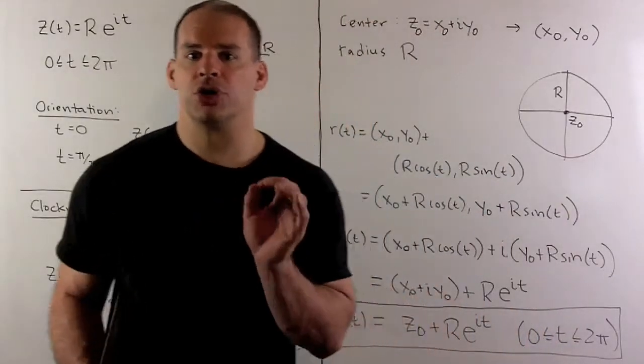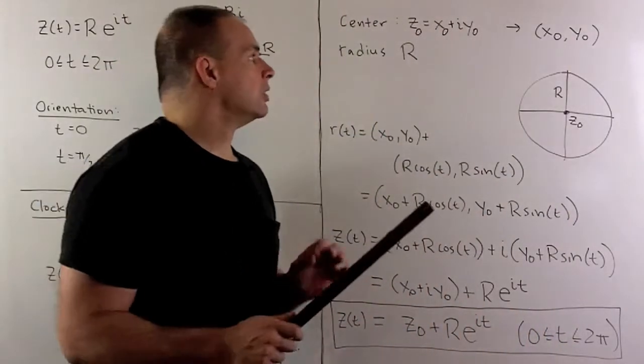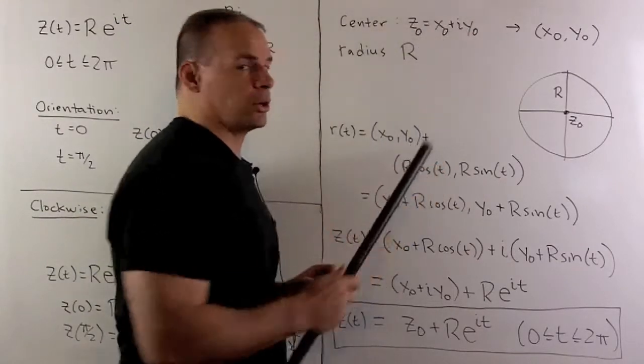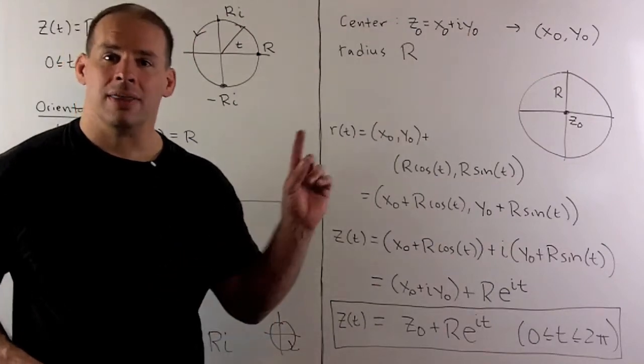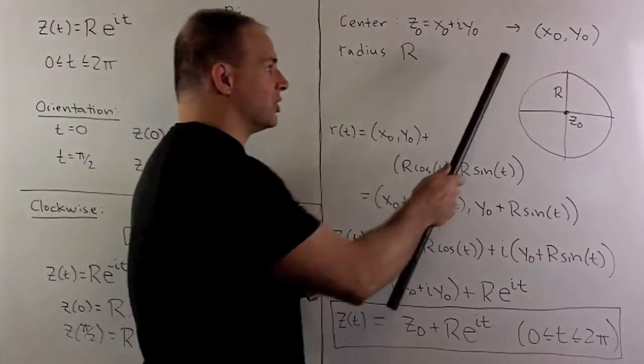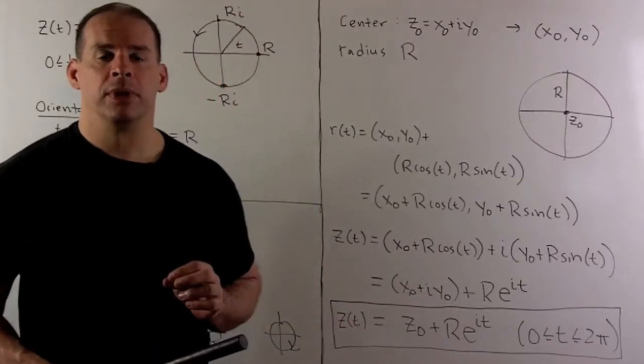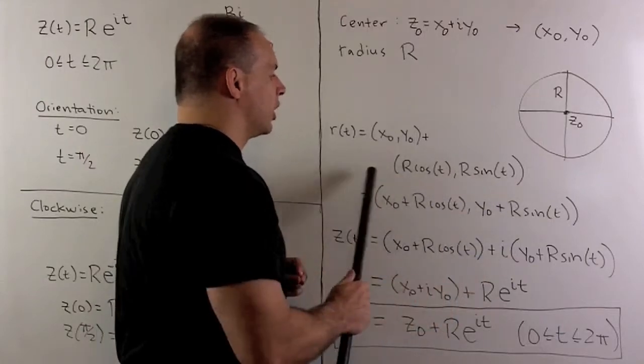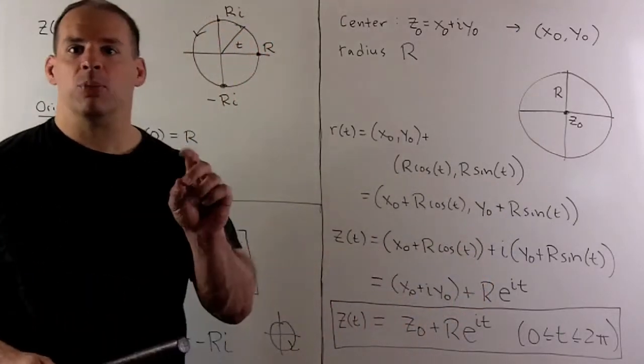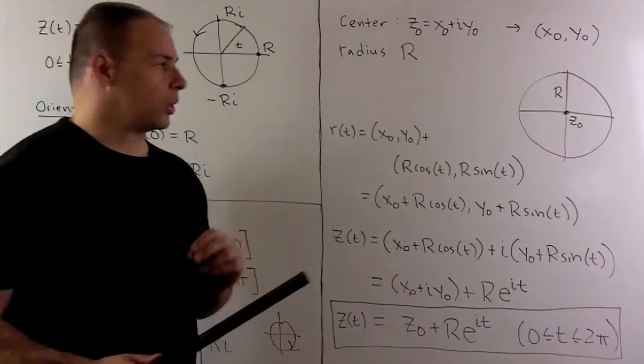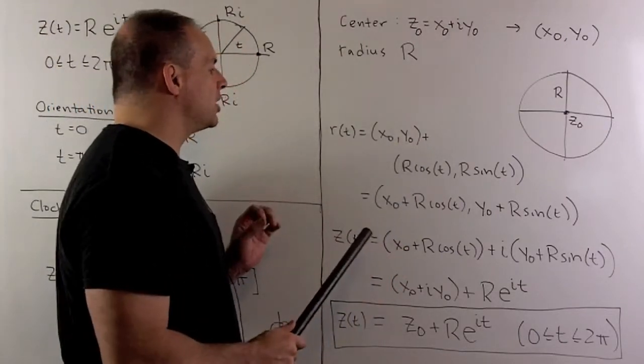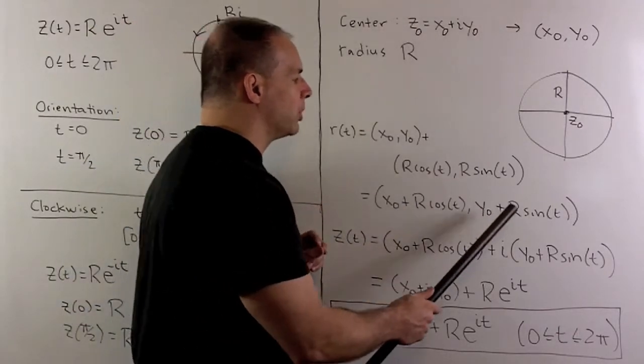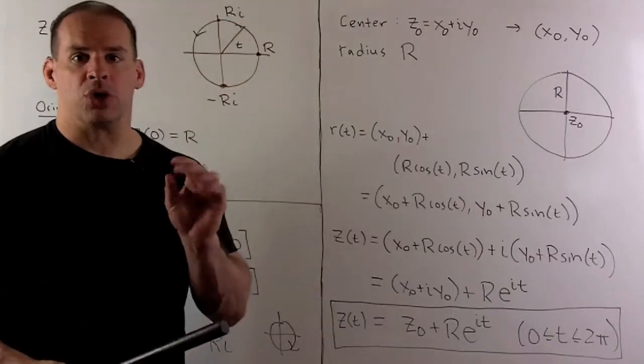Next, how about circles that are not centered at the origin? Let's suppose we're centered at the point z zero equal to x zero plus i y zero in the complex plane. That point corresponds to x zero, y zero in the xy plane. We can just take our old parameterization for the circle of radius R centered at the origin. To shift it, we just add x zero, y zero. Our new parameterization is going to be r of t equals x zero plus R cosine t, y zero plus R sine t.